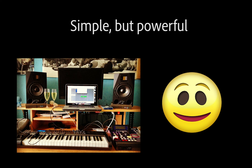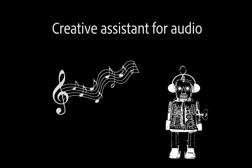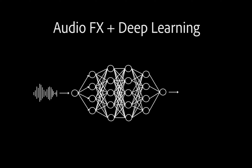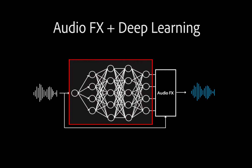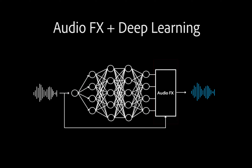In our work, we aim to simplify how audio effects are used by training a machine to use effects directly and perform automatic audio production tasks. To do so, we developed a new method to incorporate third-party audio signal processing effects plug-ins as layers within any deep neural network. We then use a deep encoder to analyze sound and learn to control audio effects that themselves perform signal manipulation.